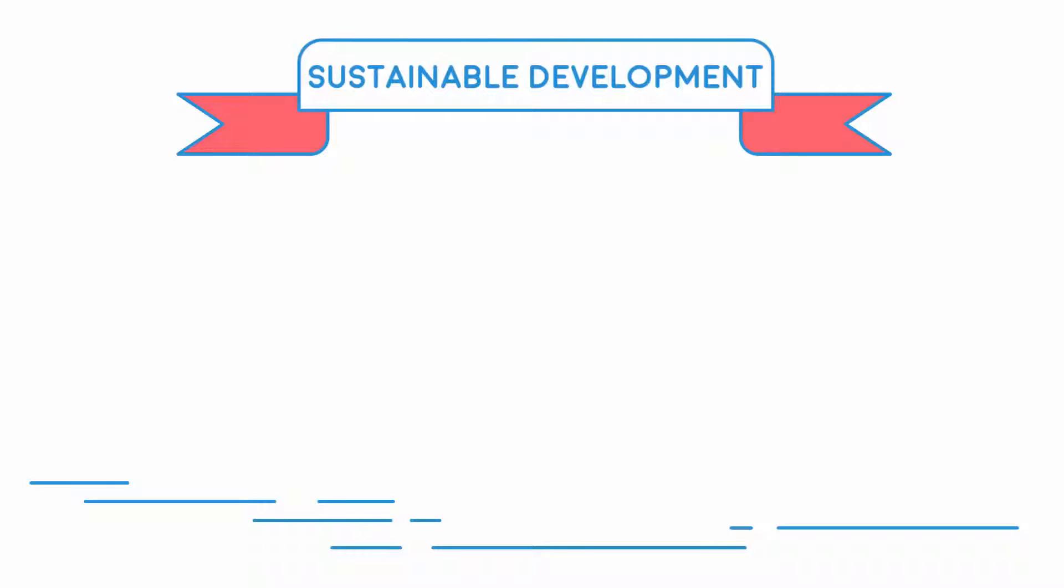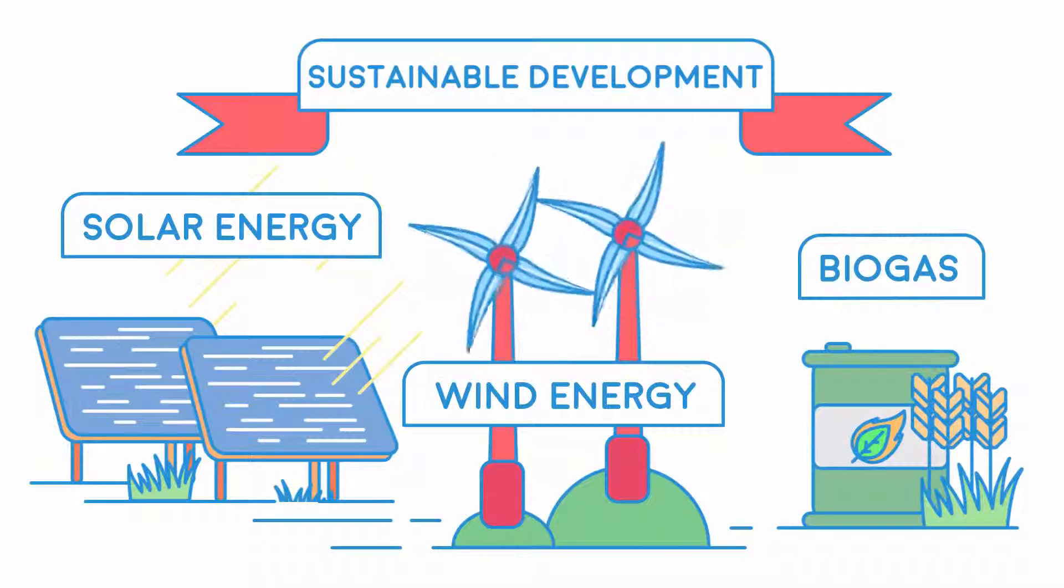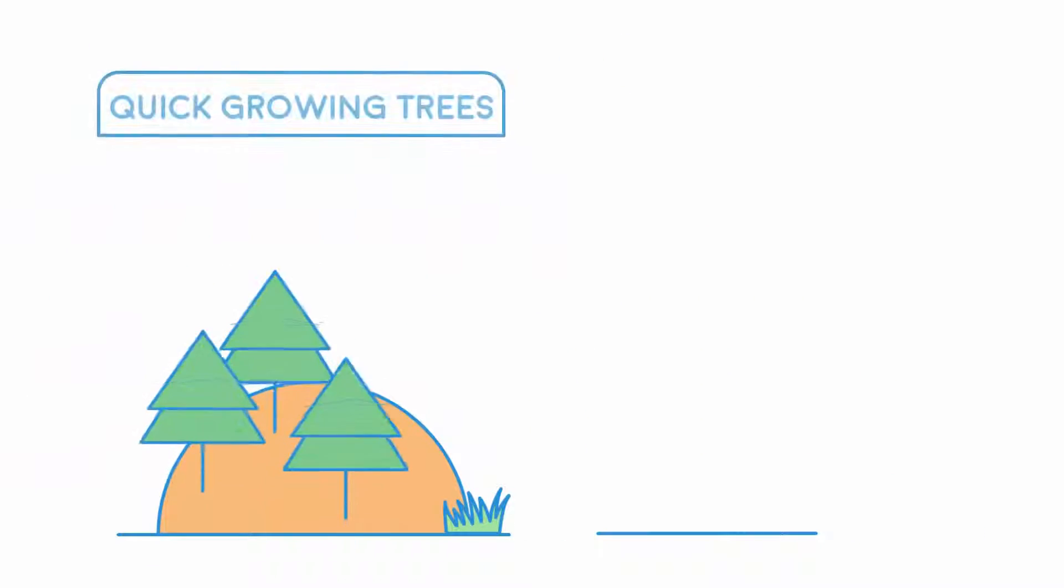One way is to use renewable resources such as solar energy, wind, and biogas to generate electricity rather than fossil fuels. Another example is using quick-growing trees like pine as a source of wood.